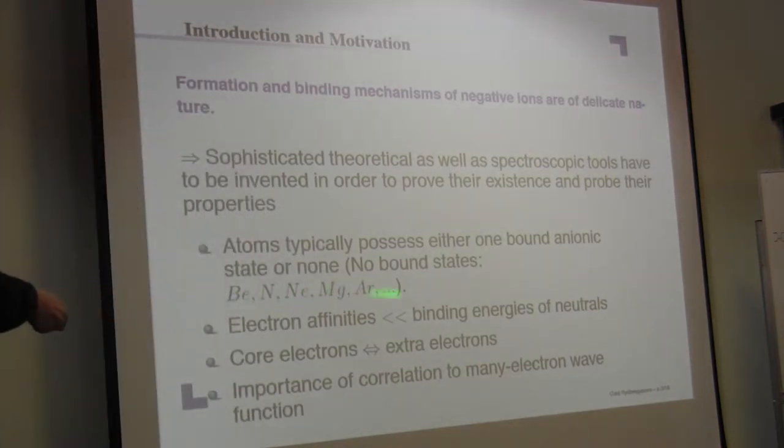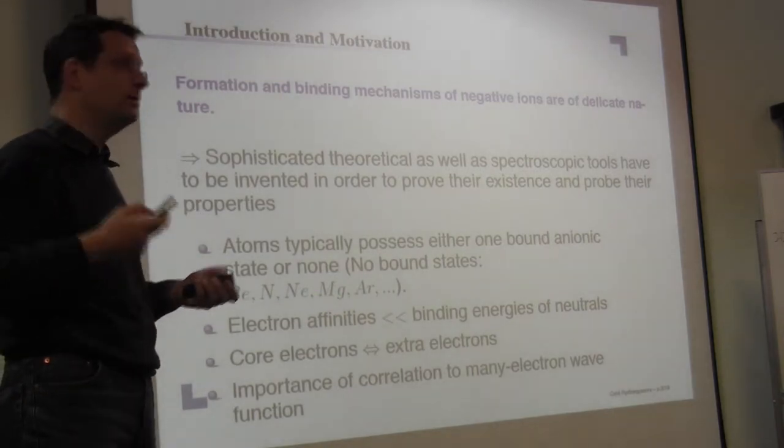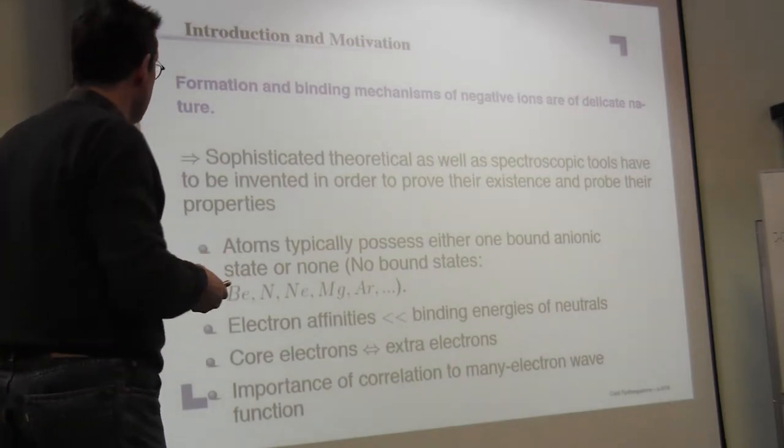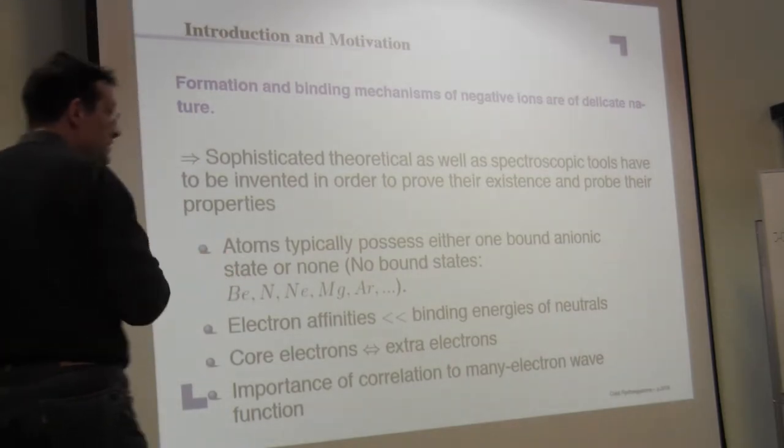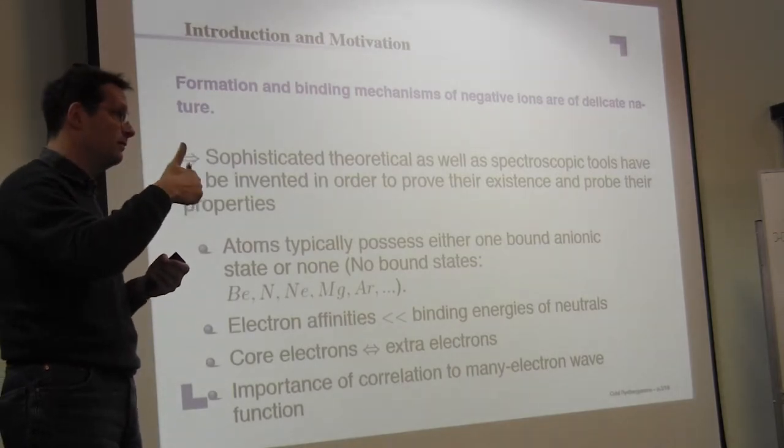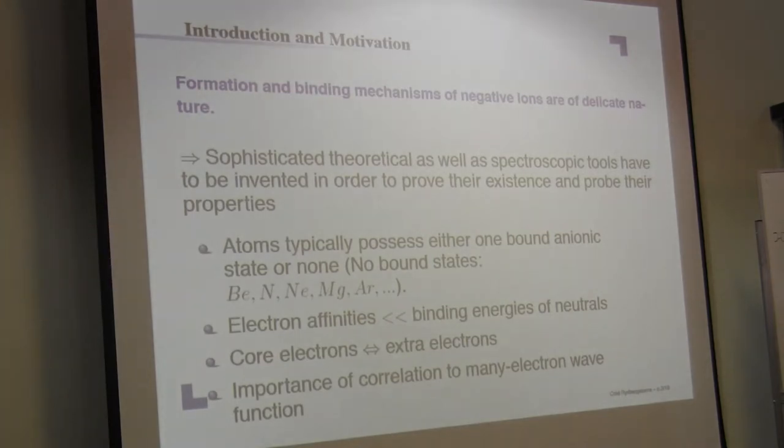Then there's a whole series of elements, of atoms, that have no negative ions. You can put the electron there, there's no bound state. Then generally speaking for most of the atoms, there's only one bound state. There's a few species that have two bound states.